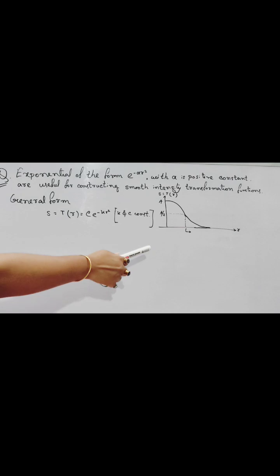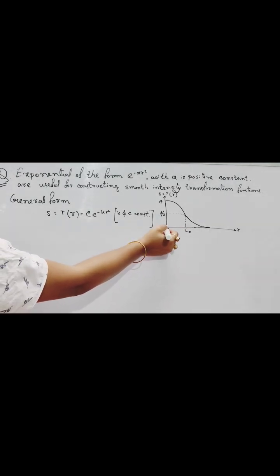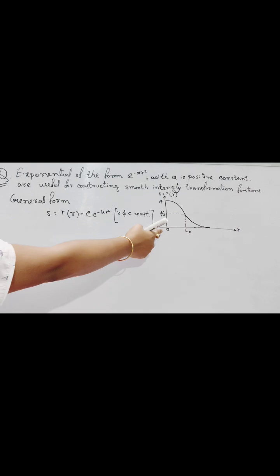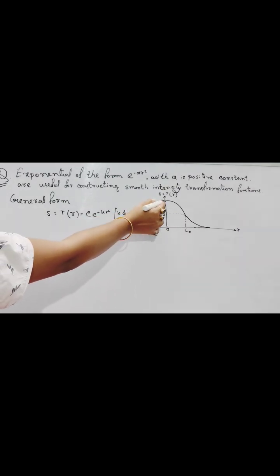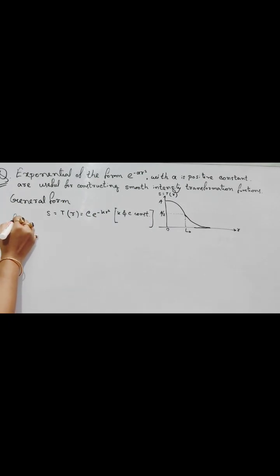From the given graph, when R equals to 0, then S equals to A. So we can write S equals to C into e to the power R times 0, which is e to the power 0. S equals to A.